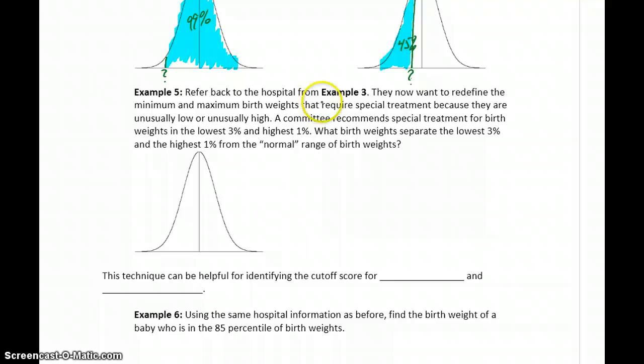Let's refer back to the last example, or two examples ago, where we had the hospital with its cutoffs for unusually high or unusually low birth weights. The committee is recommending special treatment for birth weights in the lowest 3% and highest 1%. So we want to come up with the new standards. What's the birth weight that's too low, requires special treatment. What's the birth weight that's too high, and requires special treatment.